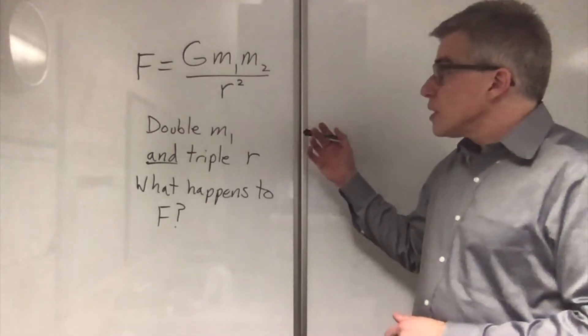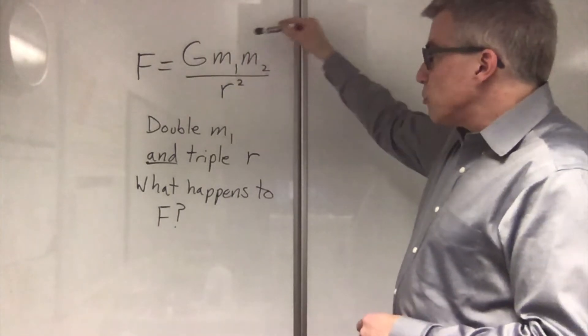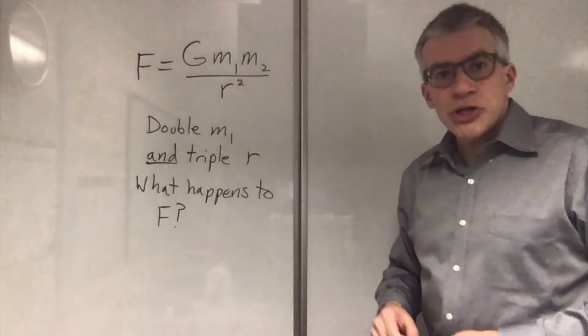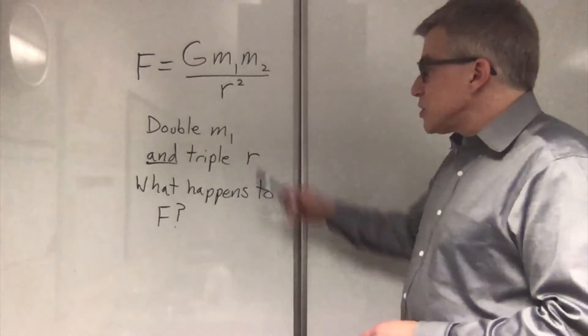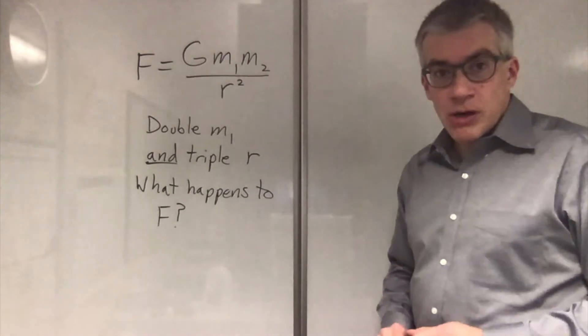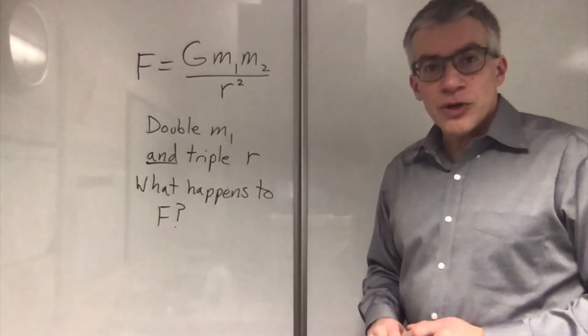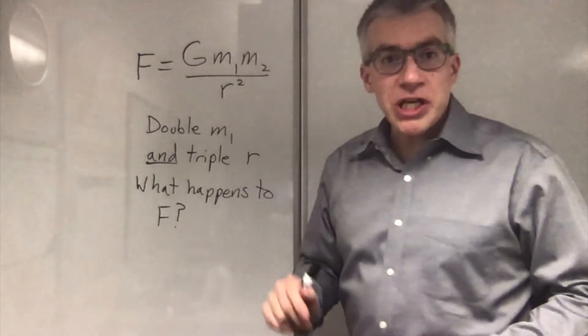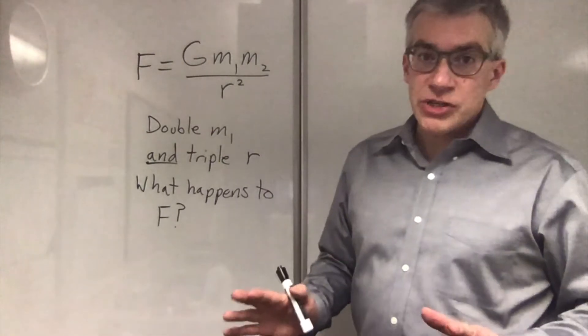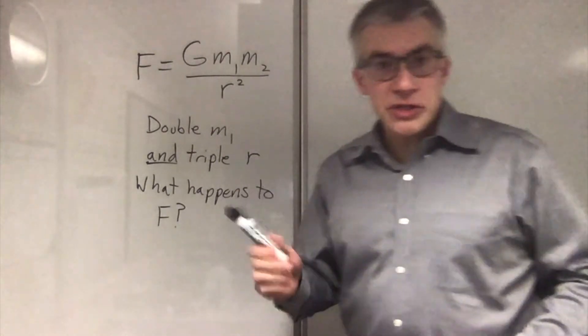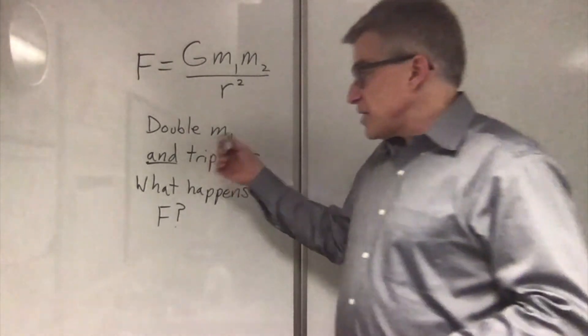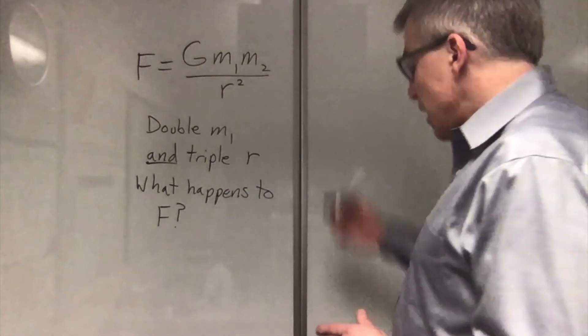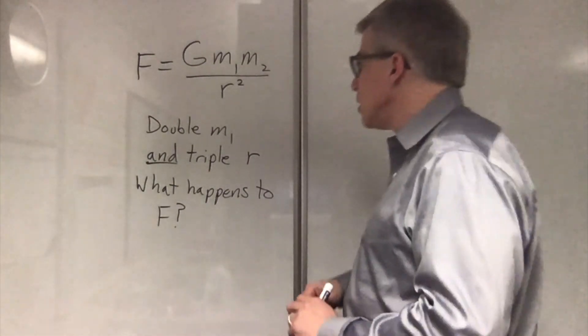Now for a trickier example. f is g m1 m2 over r squared. I want to change two things at once. I want to double the m and triple the r. What happens to f? So implicitly, we're assuming that m2 and big G are constant. They are not changing. The only things that are changing are the things we said are changing and by the factors we said.